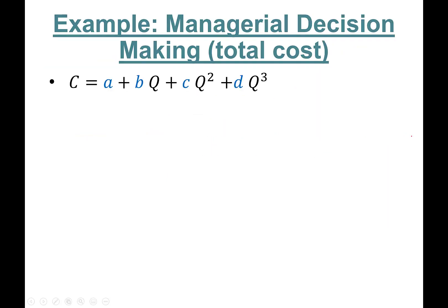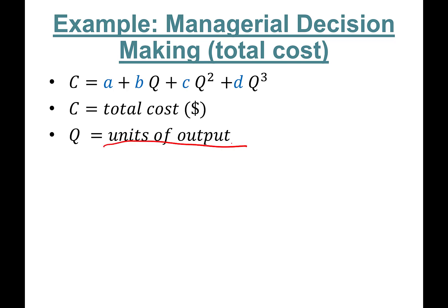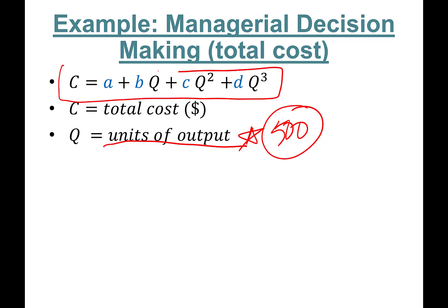Let's get started with Part 1. Managerial decision-making is 100% related to studying mathematical relationships between economic variables. Here is an example of a cost function: C is the total cost of production measured in dollars, and Q is the units of output. We call A, B, C, and D the parameters — these are constant numbers we are trying to estimate to reveal the relationship between units of output and total cost.